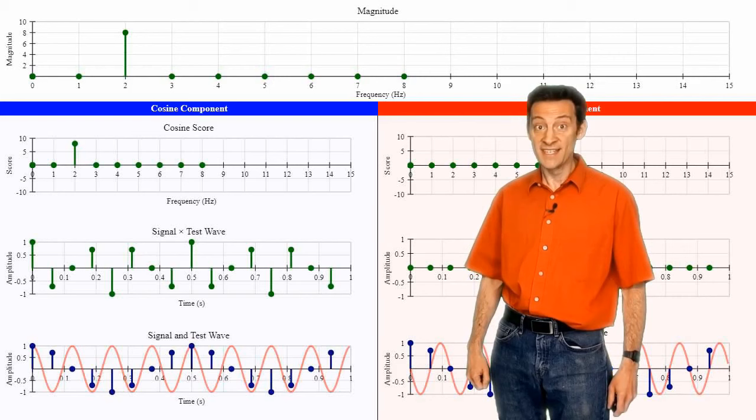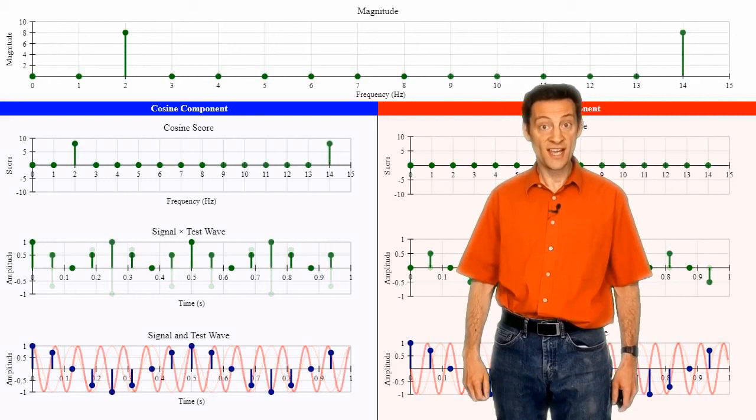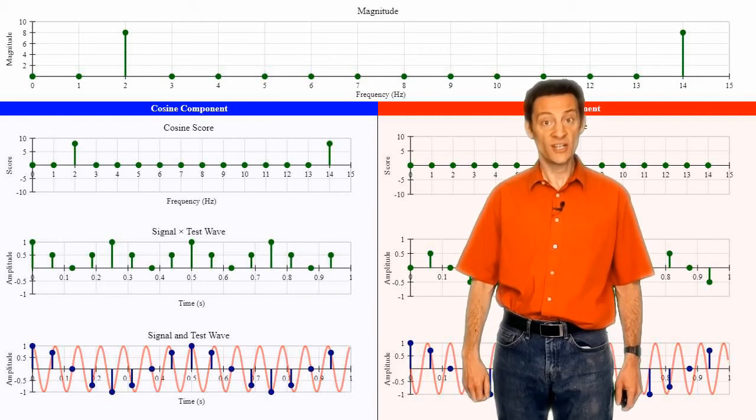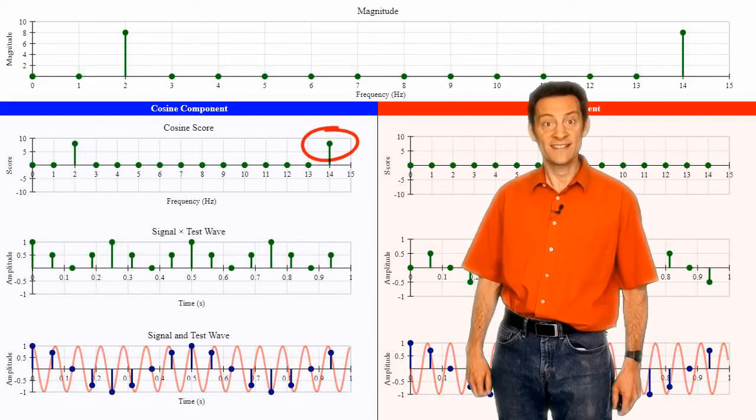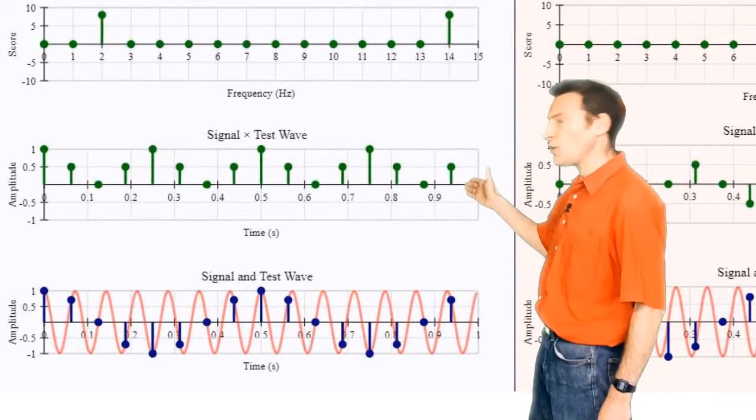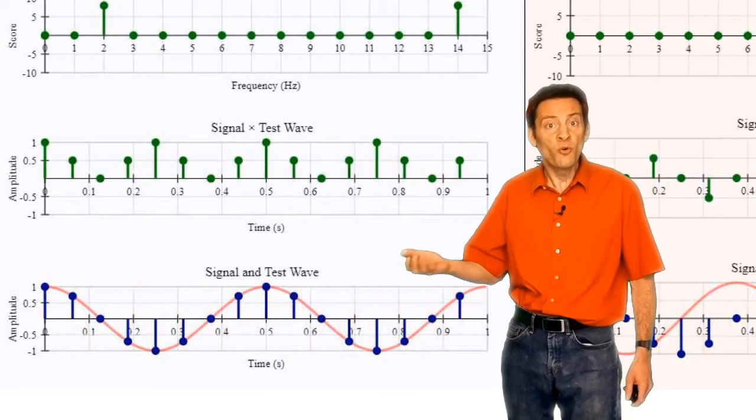I am going to demonstrate what I am talking about with a 14Hz test wave. You will see why in a second. When I test the signal with a 14Hz wave, the cosine component gives exactly the same score as it did when I tested a 2Hz frequency. Looking at the multiplied graph, we can see why. There is no difference between the 2Hz frequency and the 14Hz frequency. The points are all the same.